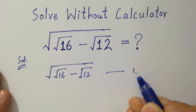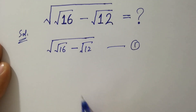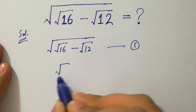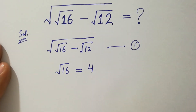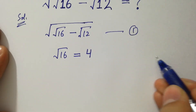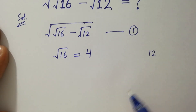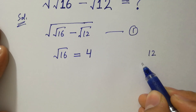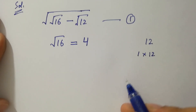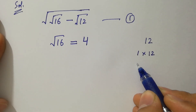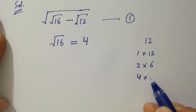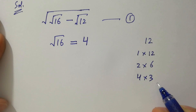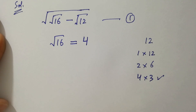Call this the first equation. We know square root of 16 equals 4. For 12, we can write it as 1 times 12, also 2 times 6, and also 4 times 3. We must choose 4 times 3 to solve this problem faster.